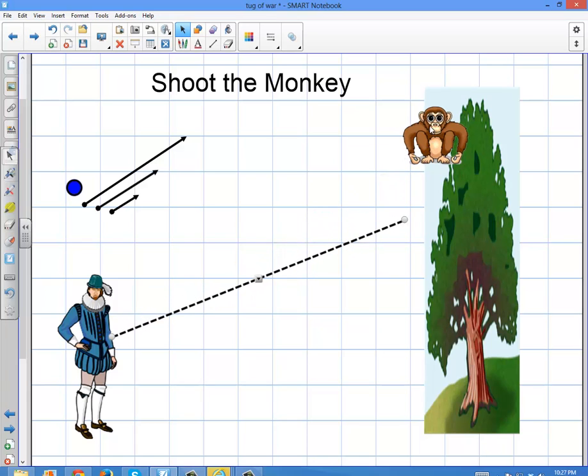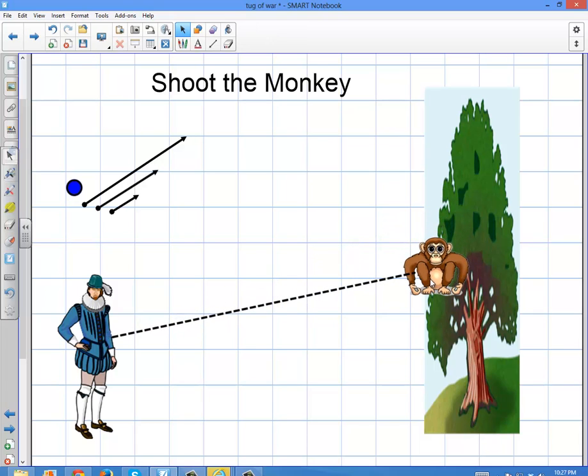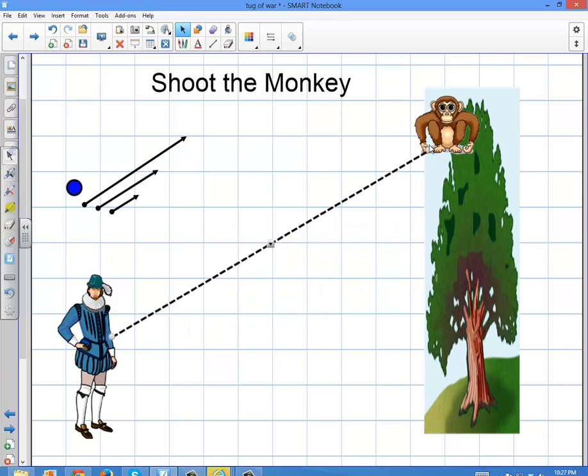Does the hunter follow the monkey down with the dart or the cannon as it goes down and then shoot? Or does the person just leave the aim exactly at the monkey right when it lets go?